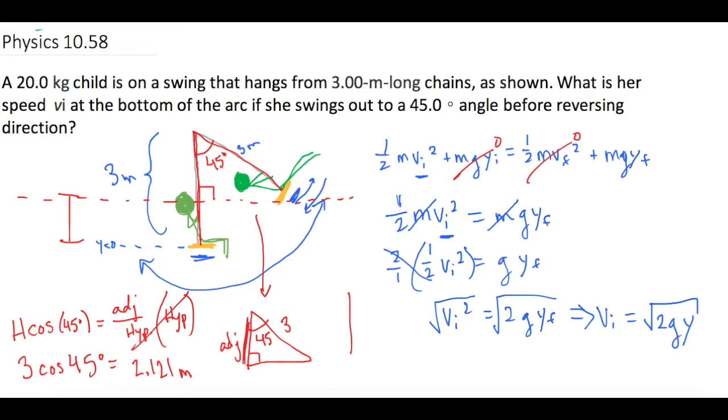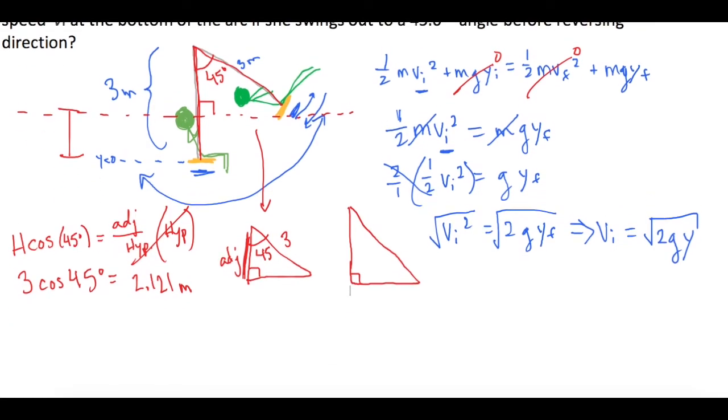3 cosine 45 gives us 2.121 meters. So now I'm going to redraw it again. We just figured out that this distance right here is 2.121. But we also know that when she's at the bottom, that it is 3 meters long.